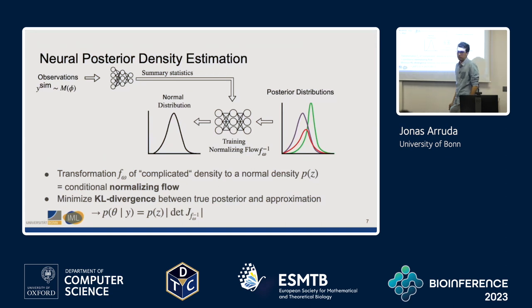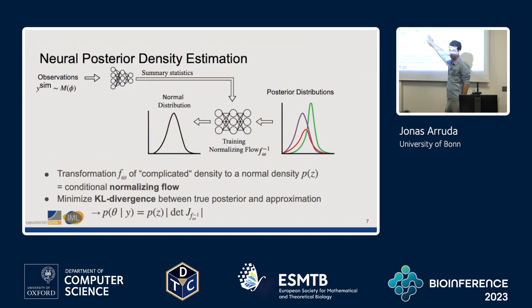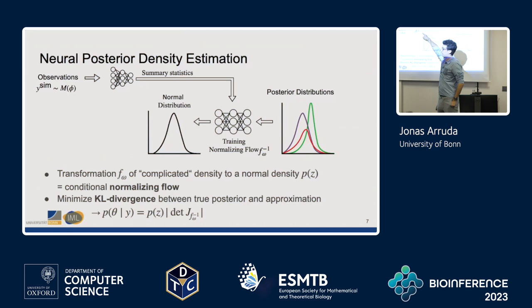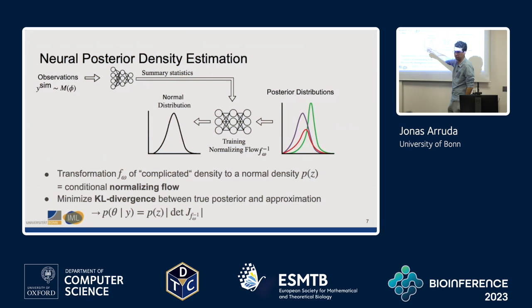How do you do the conditioning in the normalizing flow? Basically, your input is not only the parameter space but also the observations which come out of the summary statistics. What you need is a fixed vector coming out, and you have a fixed parameter dimension, and then you can use the invertibility.